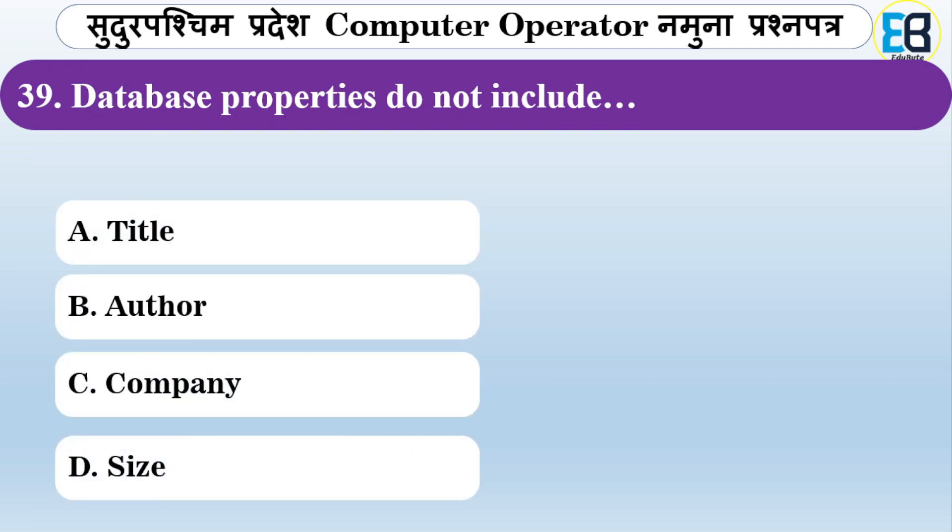Database properties do not include which of the following? Options are title, author, company, or size. The correct answer is size — size is not included in the database properties.